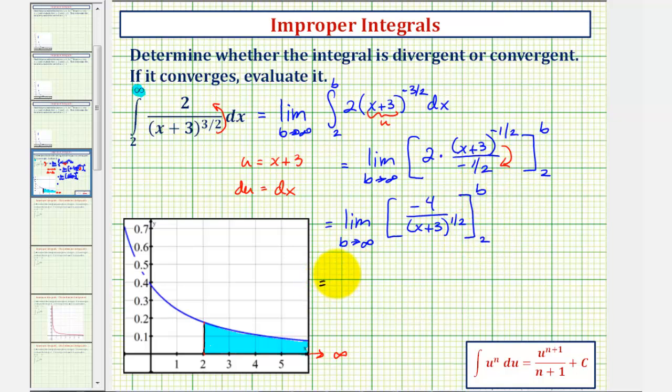This means we'll have the limit as b approaches infinity of, well when x is b we'd have -4 divided by (b + 3) raised to the positive 1/2 power.